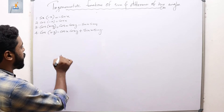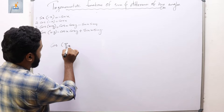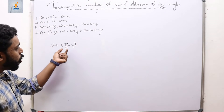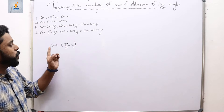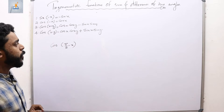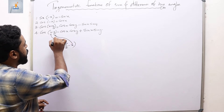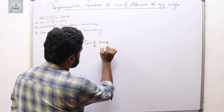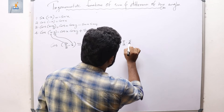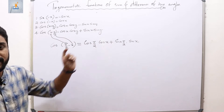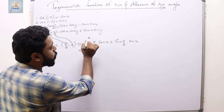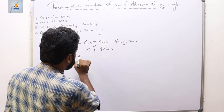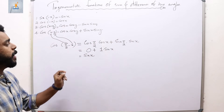Now for the fifth identity, we find cos(π/2 − x). Using the cos(x−y) formula with π/2 in place of x and x in place of y: cos(π/2 − x) = cos(π/2)·cos x + sin(π/2)·sin x. Since cos(π/2) = 0 and sin(π/2) = 1, this simplifies to sin x. So cos(π/2 − x) = sin x.